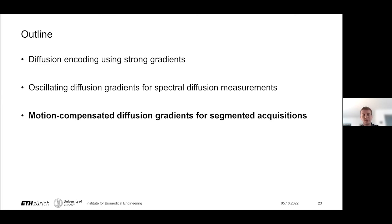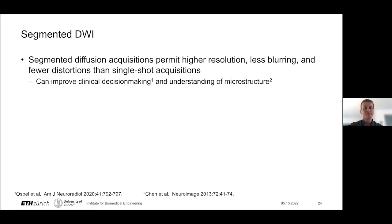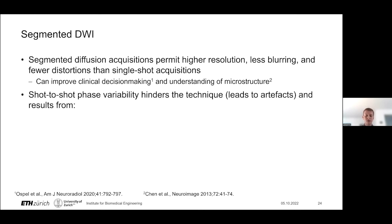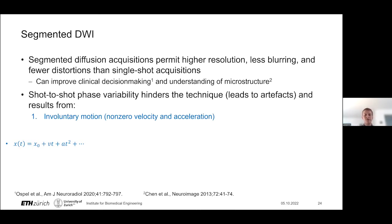I'll now move on to the final part of my presentation about using motion-compensated diffusion gradients and segmented acquisitions. The main motivation for performing segmented diffusion acquisitions is to achieve higher resolution, less blurring, and fewer distortions than in single-shot acquisitions. It has been shown that using higher imaging resolution can improve clinical decision making and further our understanding of brain microstructure. Despite these promises, multi-shot DWI is limited by shot-to-shot phase variability, which results in artifacts, and has two main causes.